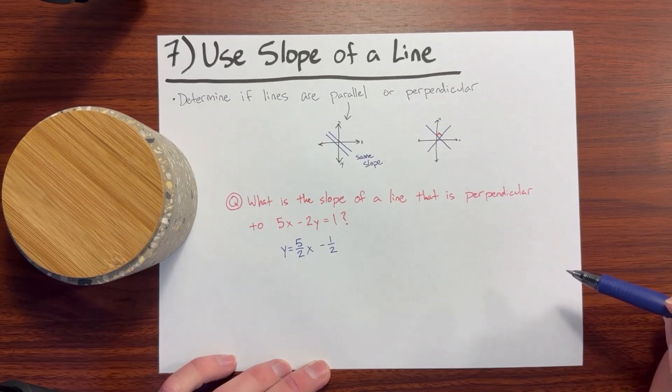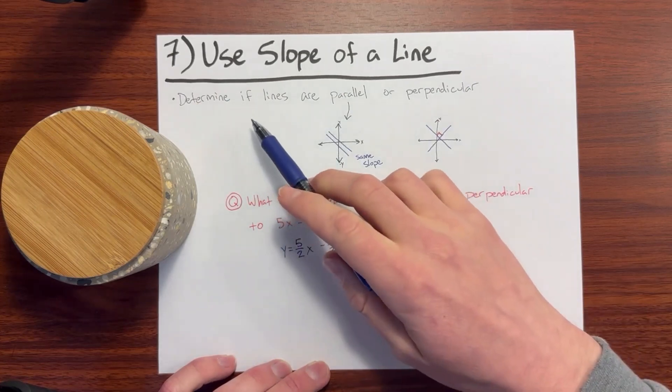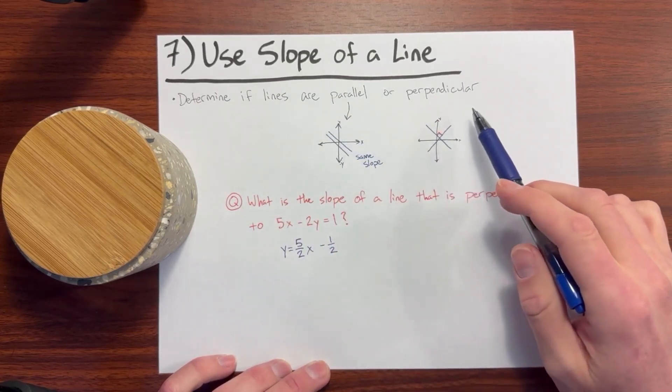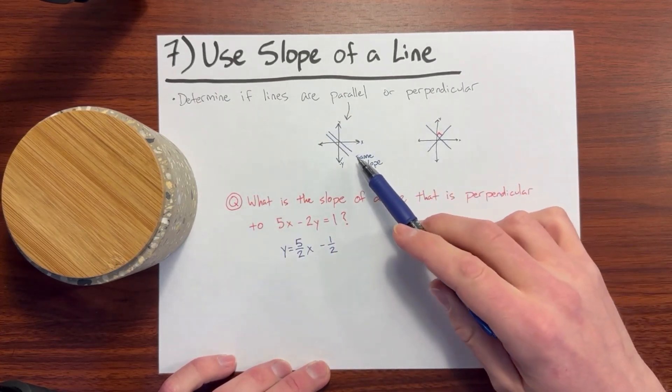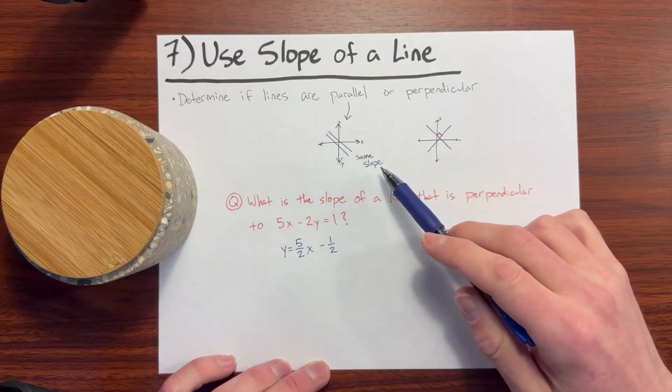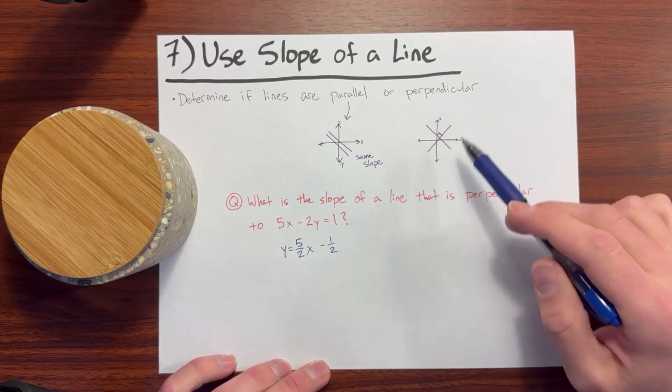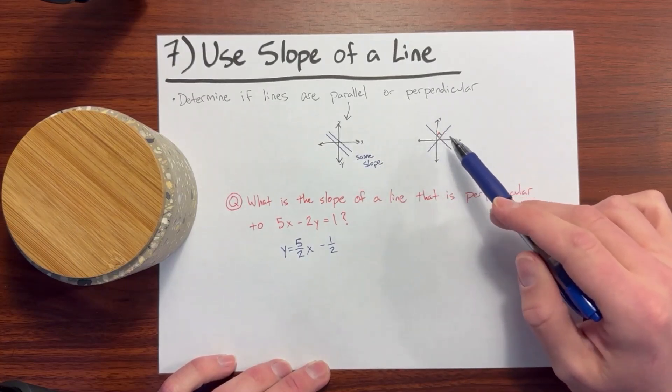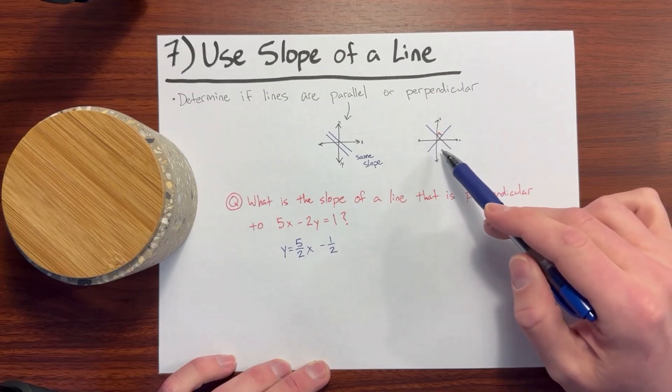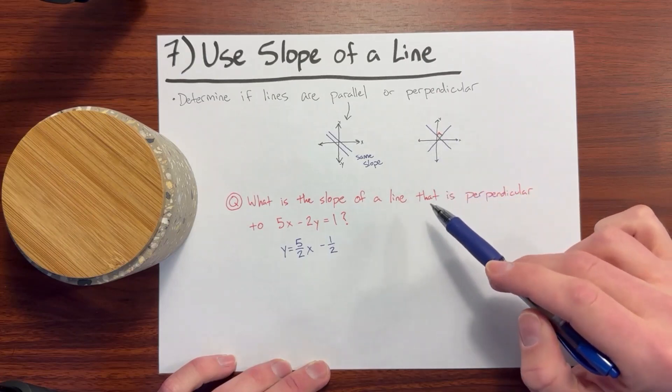Number 7: Use the slope of a line to solve problems. In particular, you'll need to determine if lines are parallel or perpendicular. Parallel meaning that they run side by side and have the same slope. Perpendicular meaning that they are opposite in slope and when graphed they would meet at a 90 degree angle.